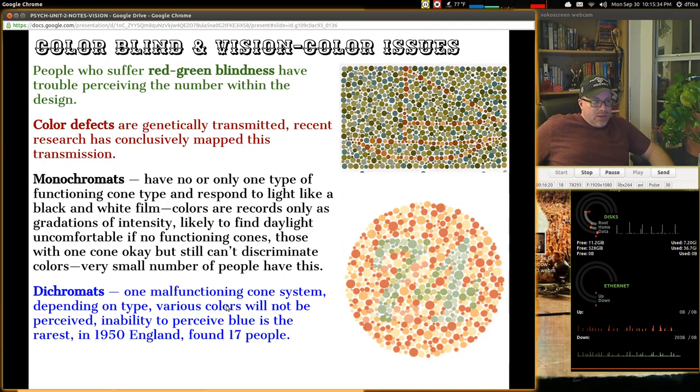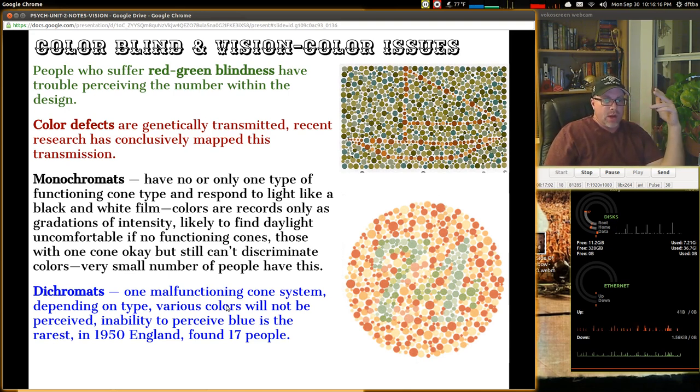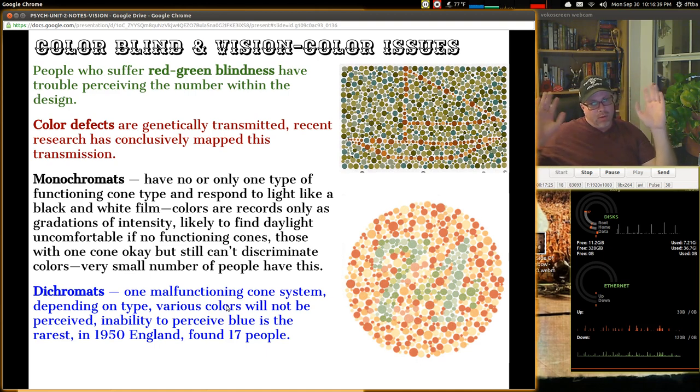Let's look at color blindness and color issues with vision. People who suffer red-green blindness have trouble perceiving the number within the color design at the bottom or the boat at the top there. So they won't be able to see those things. It'll sort of seem to be like grayish or they will get the same colors that are surrounding it. So color defects are genetically transmitted. This means that recent research has concluded that it's conclusively mapped that this is the case. Monochromats, which have no or only one type of functioning cone type and respond to light as black and white film, like a black and white television program or movie. Colors are records only as gradients of intensity, but likely to find daylight uncomfortable. If no functioning cones, those with one cone, which is okay, but still can't discriminate colors. Very small people are monochromats, but it is possible.